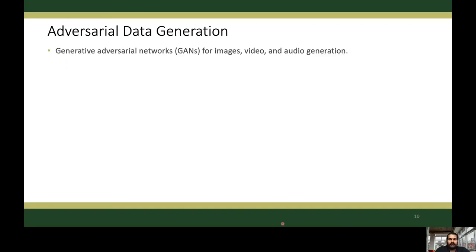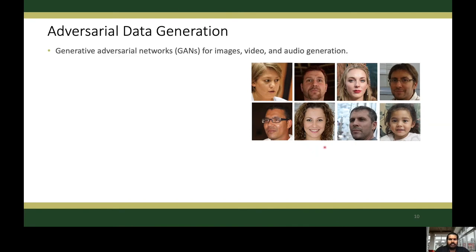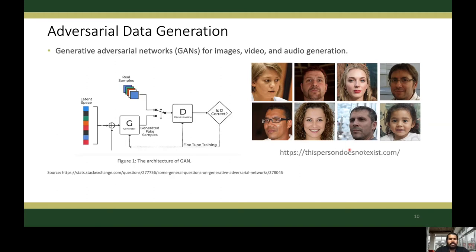Generative adversarial networks are widely used for image, video, and audio generation in the last few years. Here are some example human faces — do you think these people exist? The answer is no. These are faces generated through generative adversarial networks and these people never existed. This example shows the power of generative adversarial networks. You can also try this via the thispersondoesnotexist.com website.